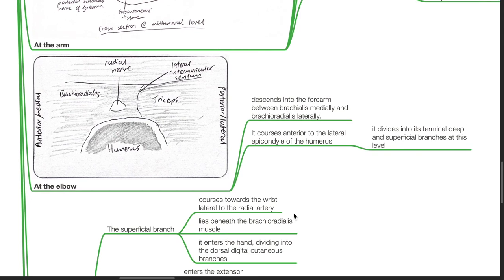At the level of the elbow, it descends into the forearm between the brachialis medially and the brachioradialis laterally. It courses anterior to the lateral epicondyle of the humerus and divides into its terminal deep and superficial branches at this level.